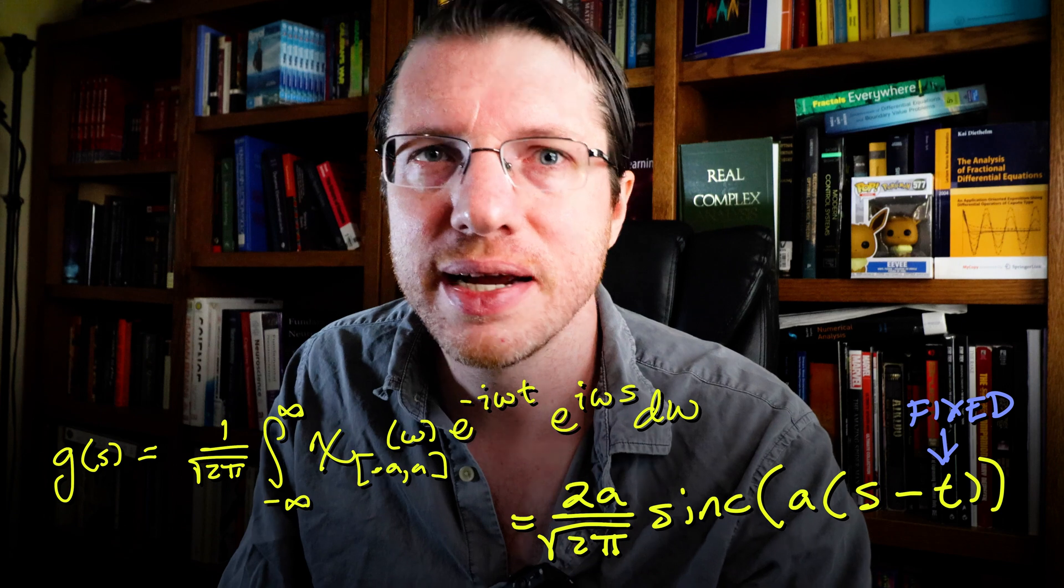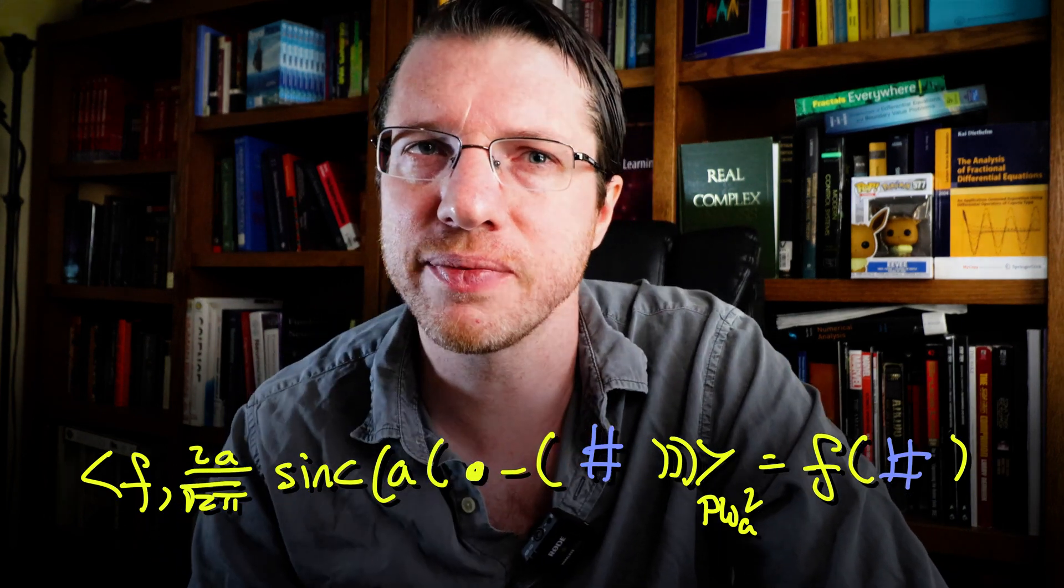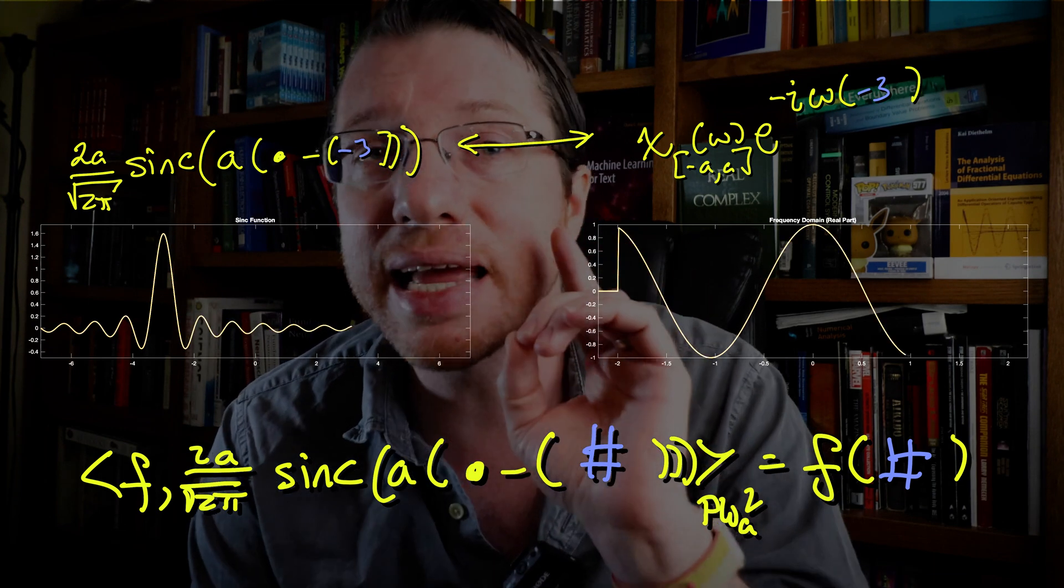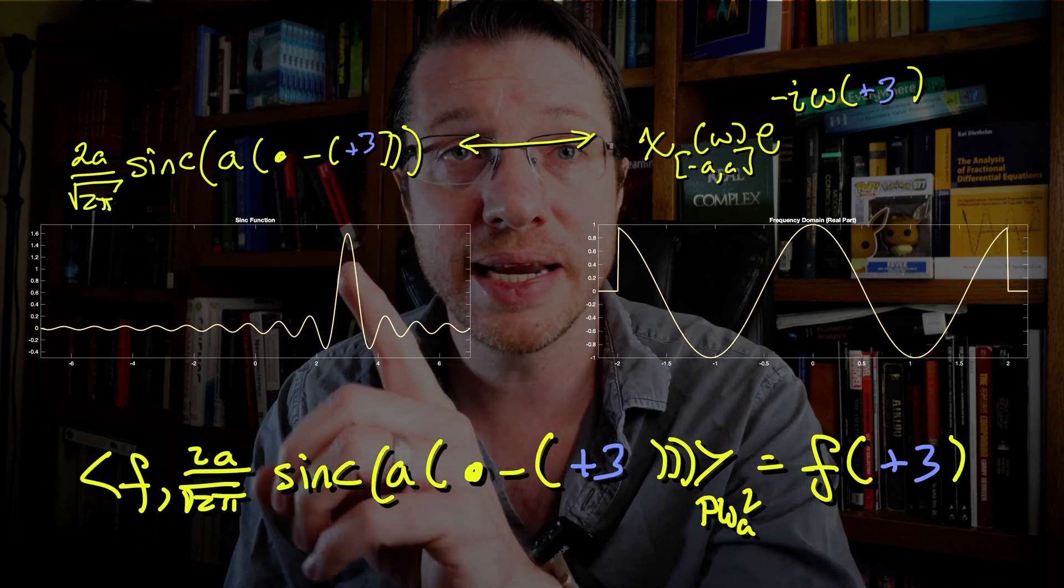The answer? The sync function. This means it's a reproducing kernel since it reproduces function evaluation. What's really cool is that if we shift the sync function, this shift manifests as a change in the exponent here.